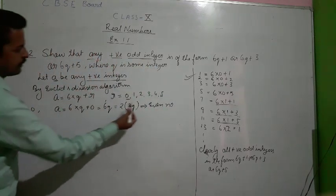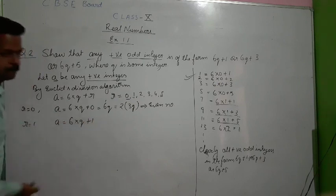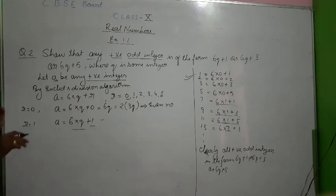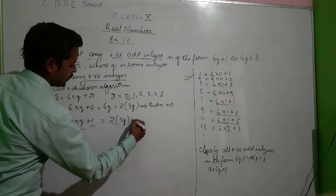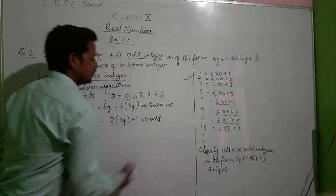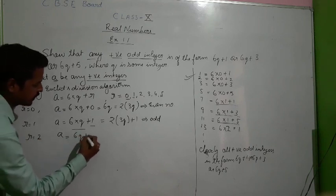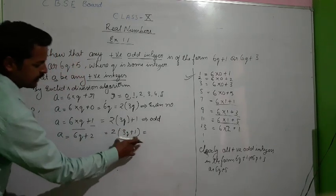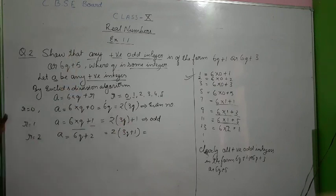When r=1, a = 6q+1. We cannot represent this in the form 2 into something, because we cannot take 2 common from the 1. We can write it as 2×(3q)+1, which is in the form 2 into something plus 1 — so this is an odd number. When r=2, a = 6q+2. Can we take 2 common from both terms? Yes — take 2 common to get 2×(3q+1), which is 2 into something, so it is an even number.